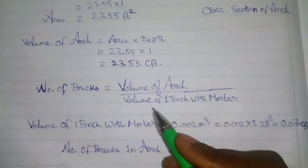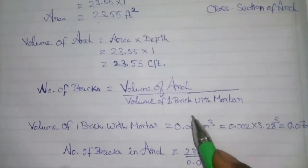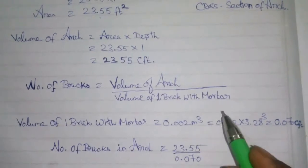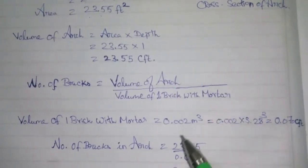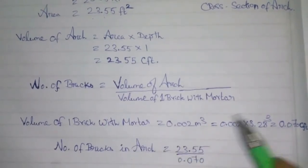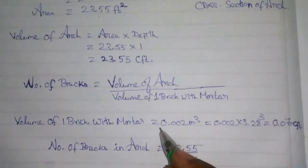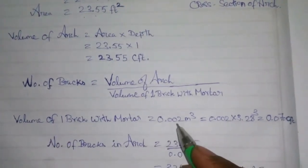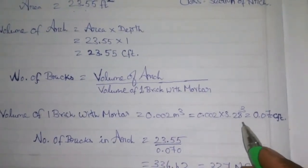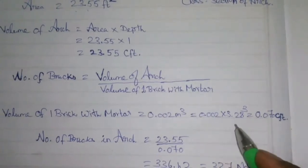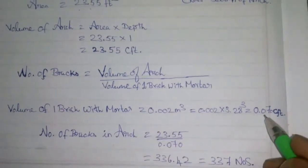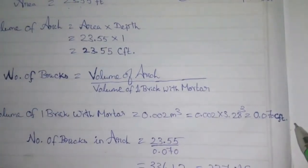The volume of one brick with mortar is 0.002 m³. In this video we are calculating the number of bricks in a wall. We convert the brick volume into cubic feet by multiplying by 3.28³, giving a volume of one brick with mortar equal to 0.070 cubic feet.